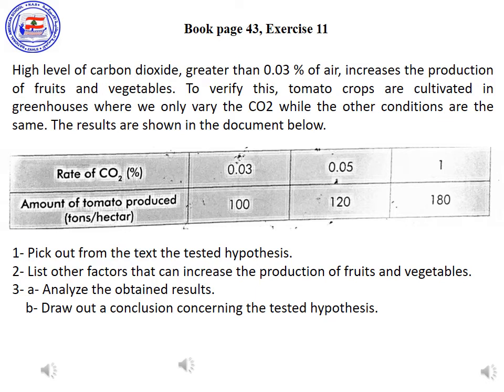Number 2: List other factors that can increase the production of fruits and vegetables. In this exercise, we are using carbon dioxide to prove it is essential. The other factors are light, water, and mineral salts.